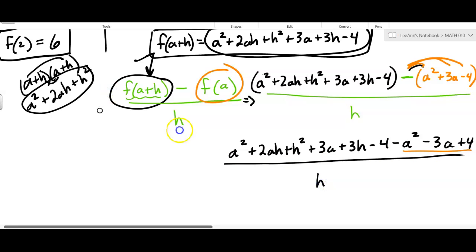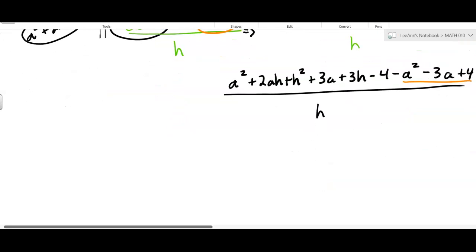Now some things should happen. The A squared here cancels with the minus A squared there. The 3A cancels with the minus 3A. And the negative 4 and the positive 4, those cancel out.